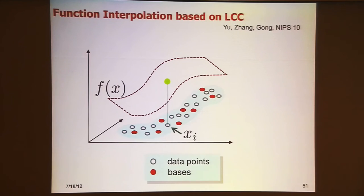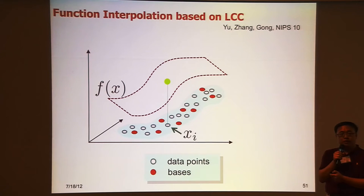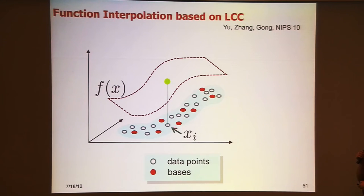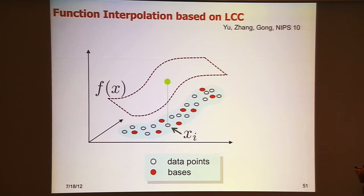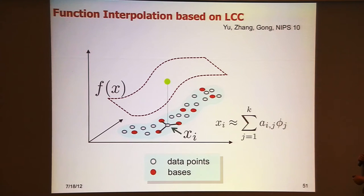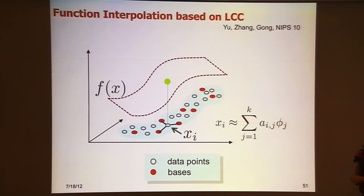The first approach is local coordinate coding (LCC). Here's the intuition: this is an unknown non-linear target function you want to learn. The red dots are the bases in your dictionary. You want to figure out the function value at a new input point. First, you encode the new data point, and then form a local basis to linearly approximate this data point. This is actually a sparse representation because you only use the local basis — other bases have zero weight.